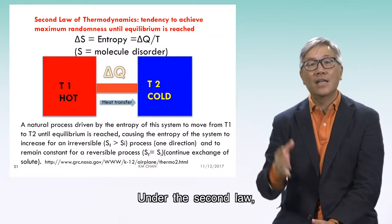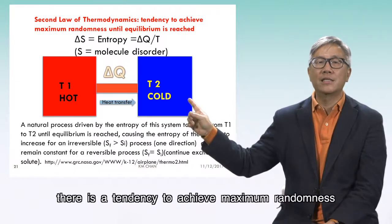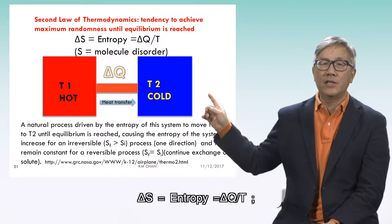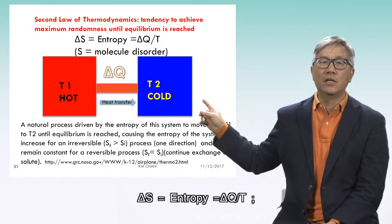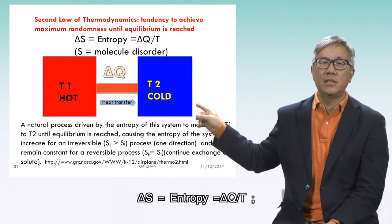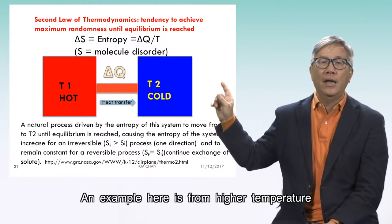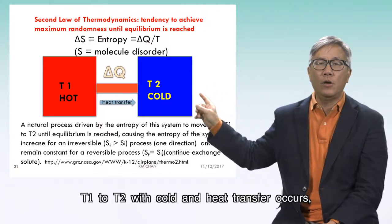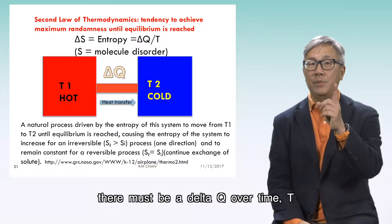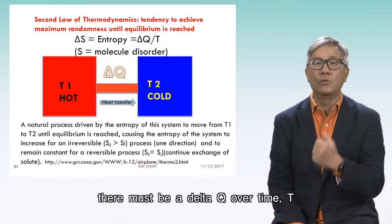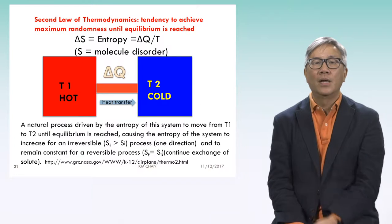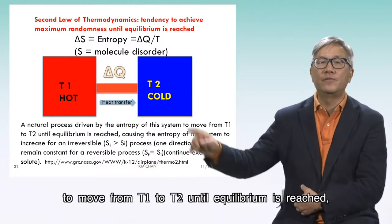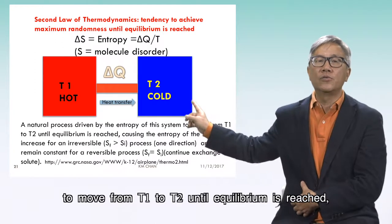Under the second law, there is a tendency to achieve maximum randomness until equilibrium is reached. Delta S, equals entropy, equals delta Q divided by T, and its molecular disorder. An example is heat transferring from higher temperature T1 to lower temperature T2, where heat transfer occurs and there must be a delta Q over T. There is a natural process driven by the entropy of this system to move from T1 to T2 until equilibrium is reached.